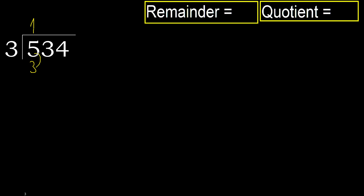It is not greater, ok. Subtract: 5 minus 3 equals 2. Next, bring down: 23.